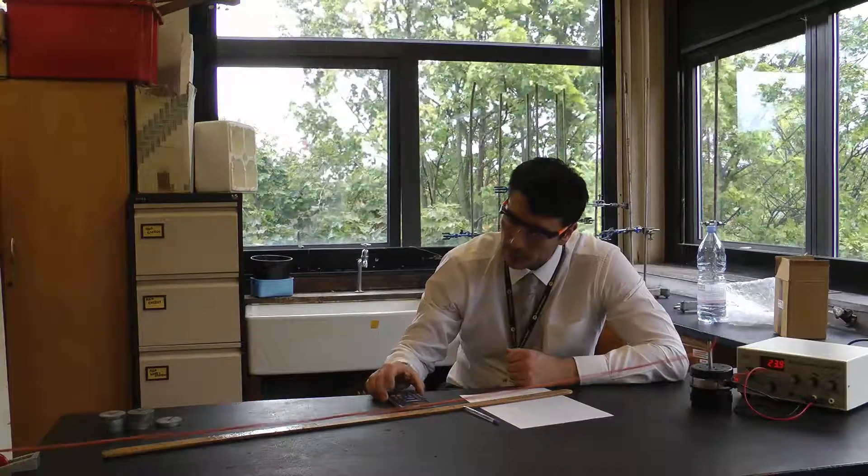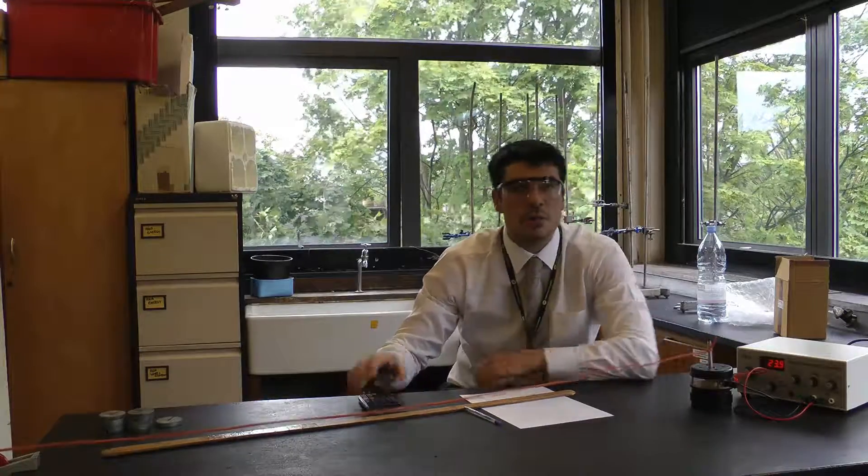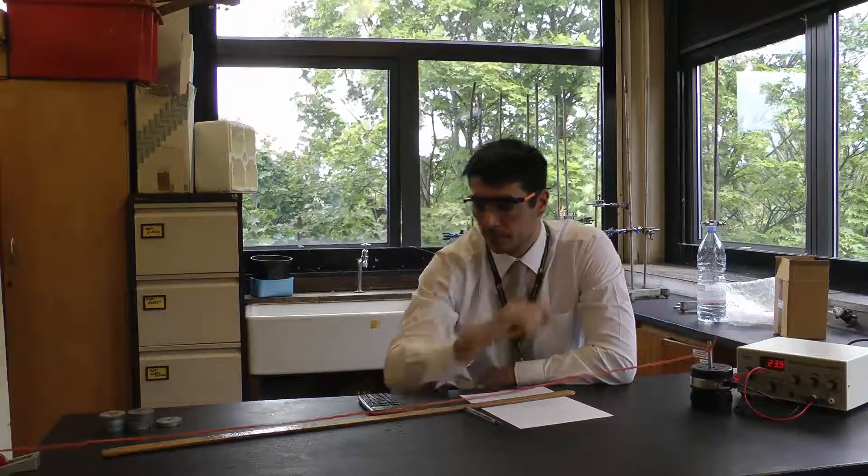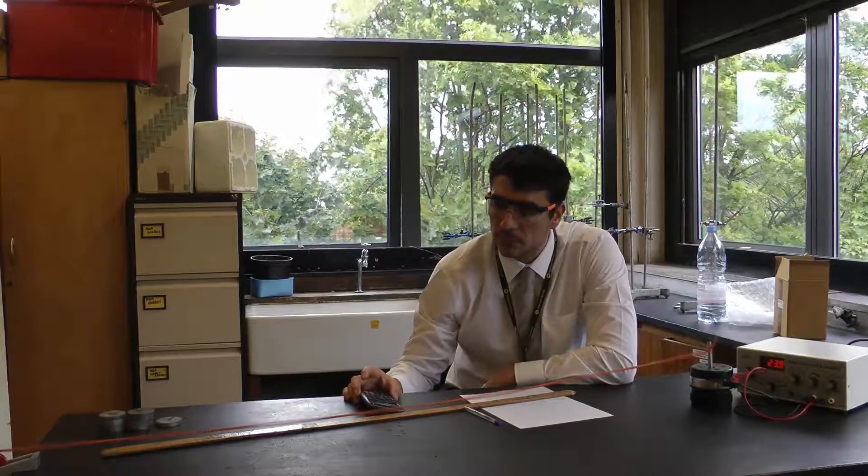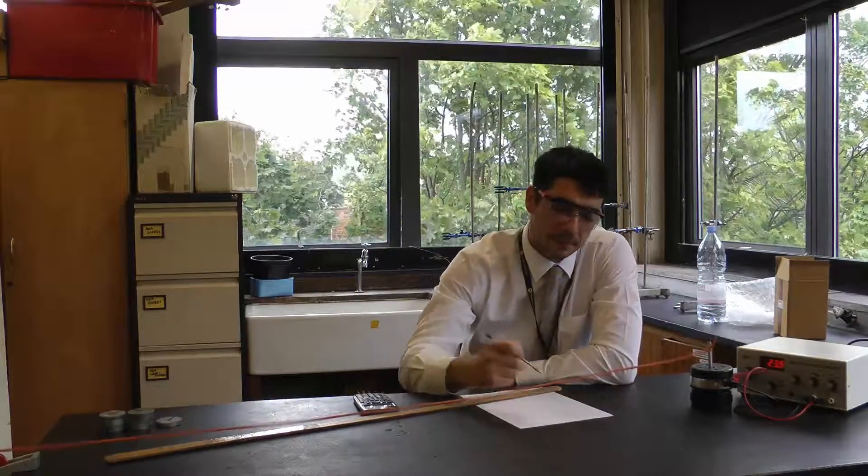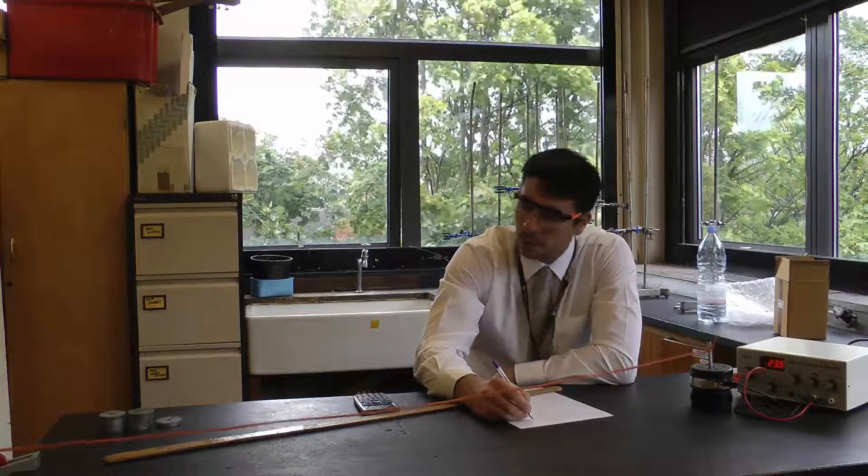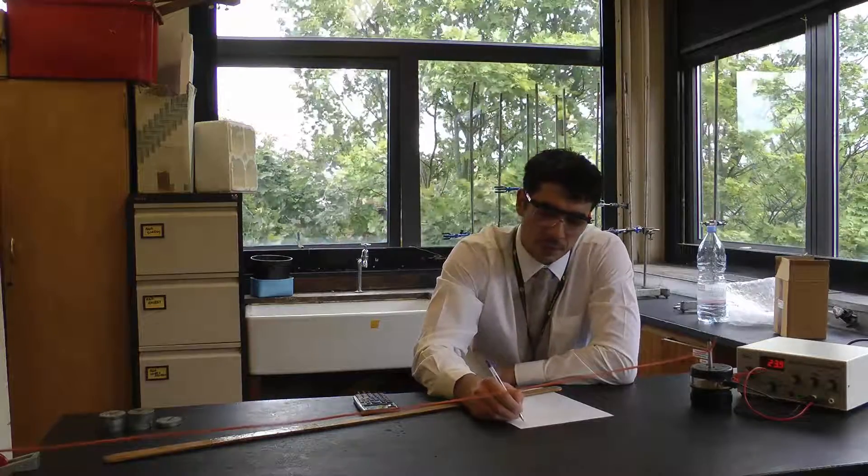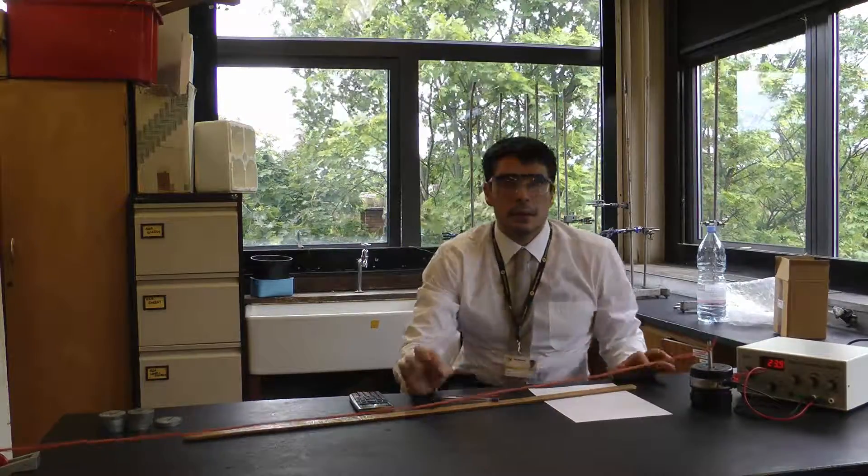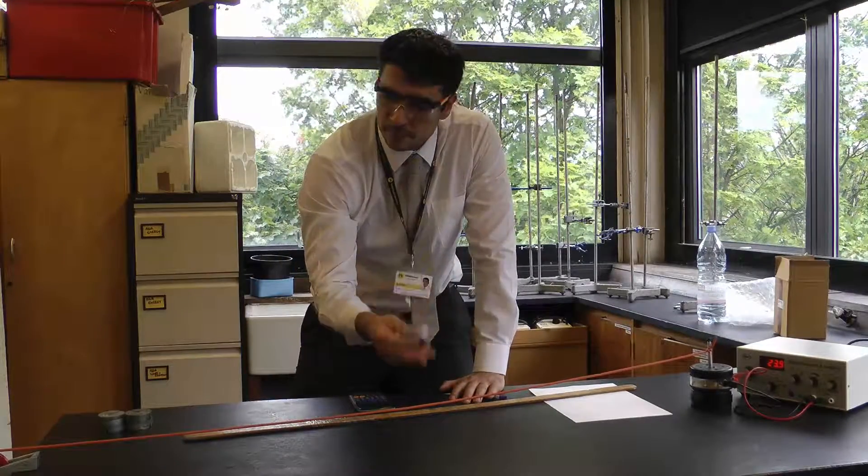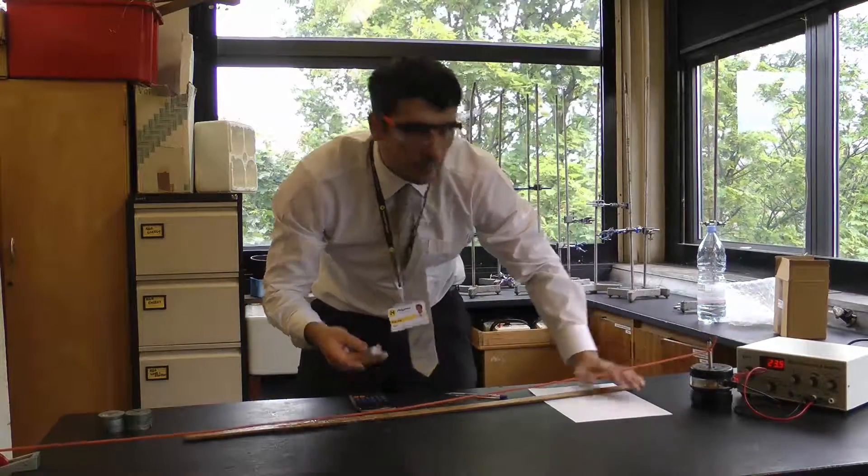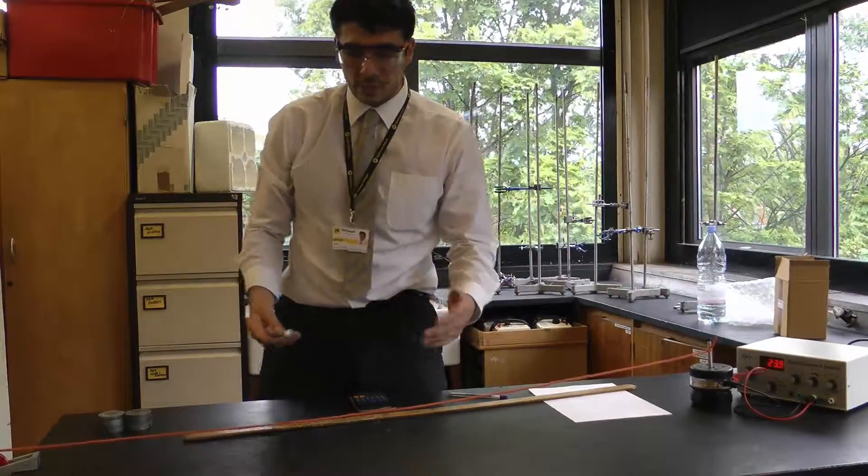I'm getting a velocity for this wave of 942 centimetres per second, which is 9.42 metres per second. If I change the tension in the string by adding another mass, I'll get a different velocity.